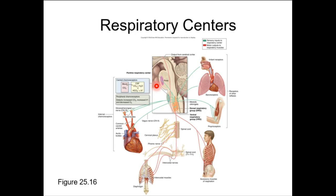The respiratory control centers are mostly located in the medulla oblongata, with another center located within the pons. These centers detect things like oxygenation level, but it's equally important for them to monitor carbon dioxide concentration. Together they control what we call respiratory rate — or more accurately, ventilation rate.